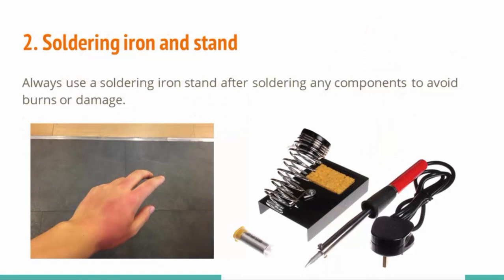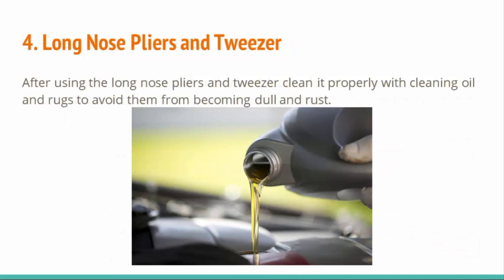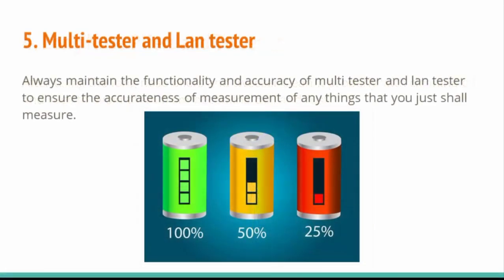Number 2: Soldering iron and stand — always use a soldering iron stand after soldering any components to avoid burns or damage. Number 3: Crimping tool and wire stripper — do not squeeze too hard, as the aim is just to form a bend in the center of the crimped area and to insulate the wire. Number 4: Long nose pliers and tweezer — after use, clean them properly with cleaning oil and rags to avoid them becoming dull and rusty. Number 5: Multitester and LAN tester — always maintain their functionality and accuracy to ensure correct measurement.